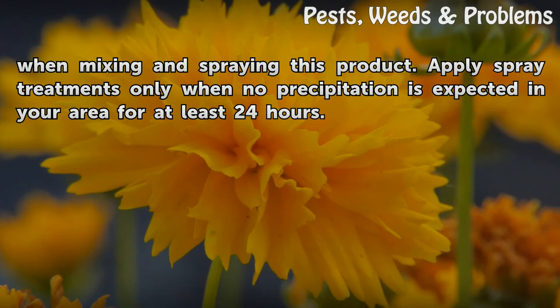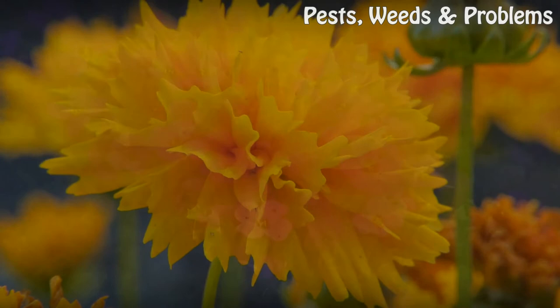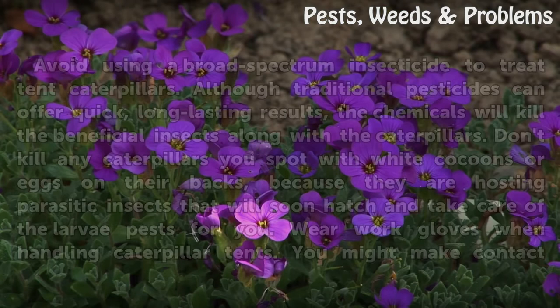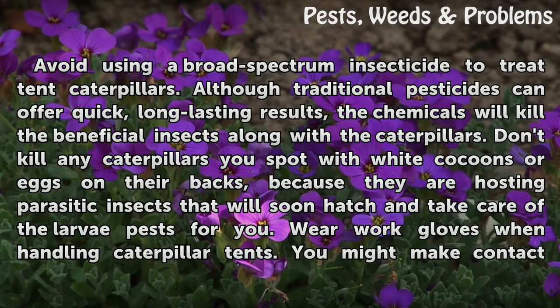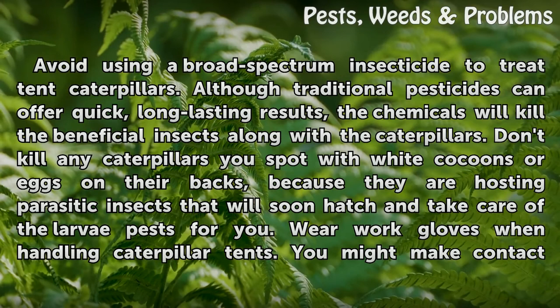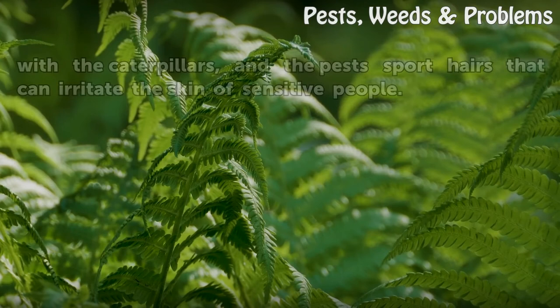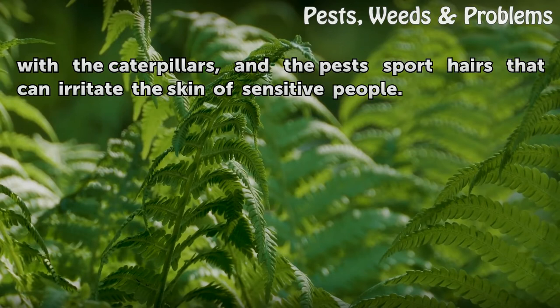Avoid using a broad-spectrum insecticide to treat tent caterpillars; although traditional pesticides can offer quick, long-lasting results, the chemicals will also kill beneficial insects. Don't kill any caterpillars you spot with white cocoons or eggs on their backs, because they are hosting parasitic insects that will soon hatch and take care of the larvae for you. Wear work gloves when handling caterpillar tents, as the pests sport hairs that can irritate the skin of sensitive people.